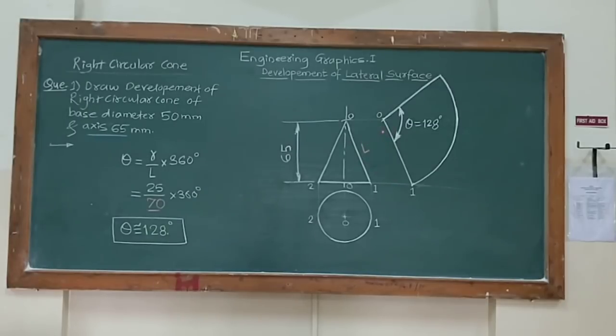Then to draw the development of cone. First draw a line O1. You can take it parallel to O1 here. Then just take a line parallel from O and this 1. Draw a line parallel to O1 here.